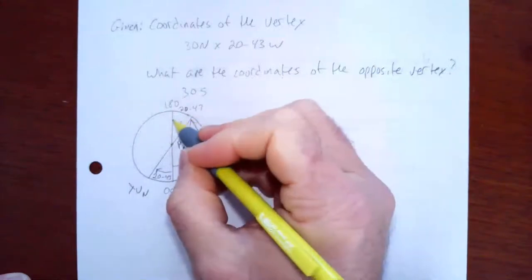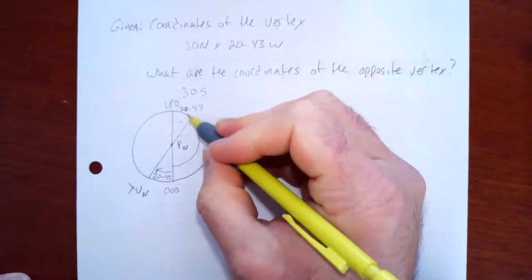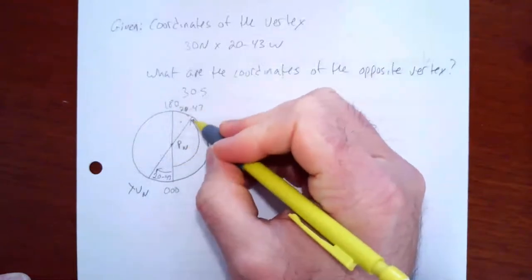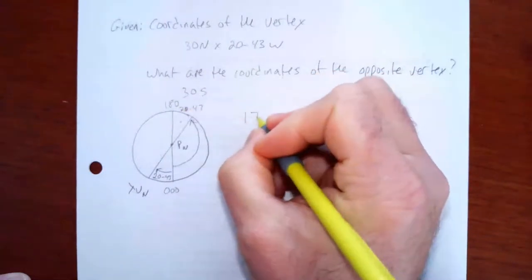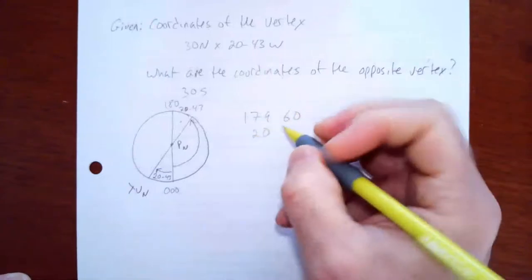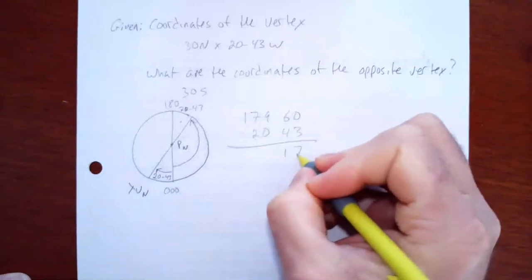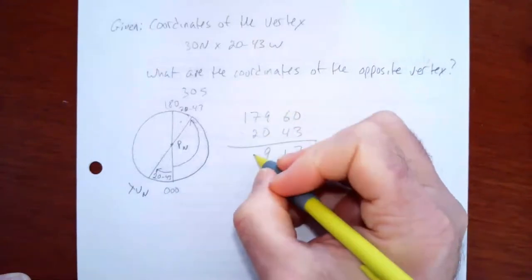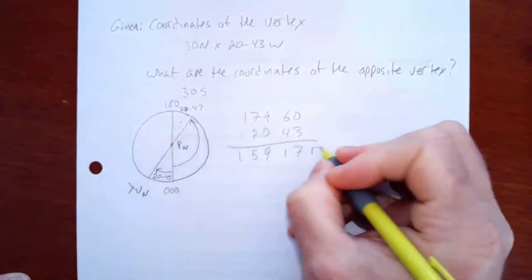So what I'm going to do is I'm going to take 180 and I'm going to subtract 20°43'. So if I subtract 20°43' from 180, it'll give me the longitude in the eastern hemisphere. So I'm going to rewrite 180 as 179°60' to make the math easy. So I can just do it with my pencil here. And I'm going to subtract 20°43'. That's going to give me 159°17'. And since I'm in the eastern hemisphere, that's east.